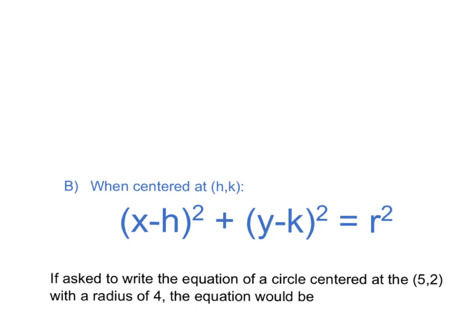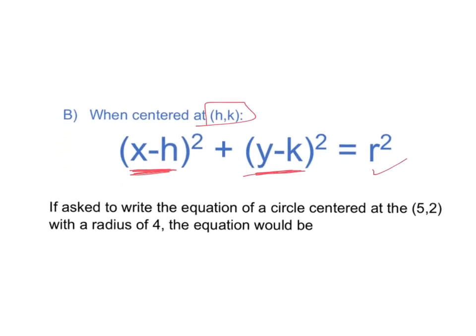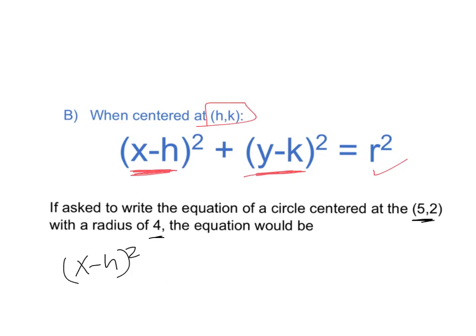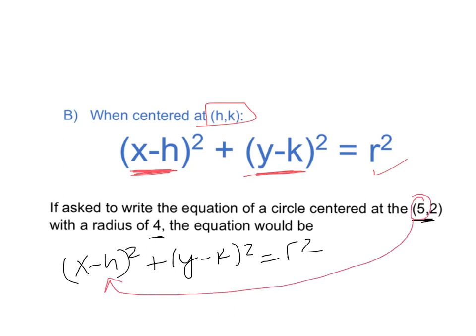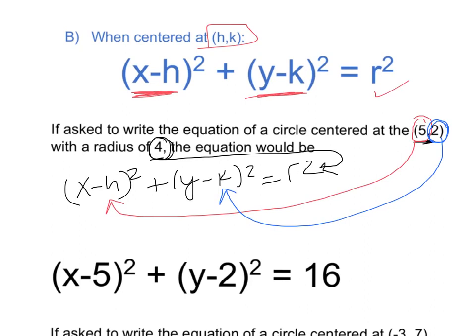This next formula is a little different: x minus h squared plus y minus k squared equals r squared — the same as before, but centered at (h, k). Because of the negative in the formula, everything appears backwards. If asked to write the equation of a circle with center (5, 2) and radius 4, write the formula first, then substitute: 5 into the h spot, 2 into the k spot, and 4 into the r spot. The result is x minus 5 quantity squared plus y minus 2 quantity squared equals 16.